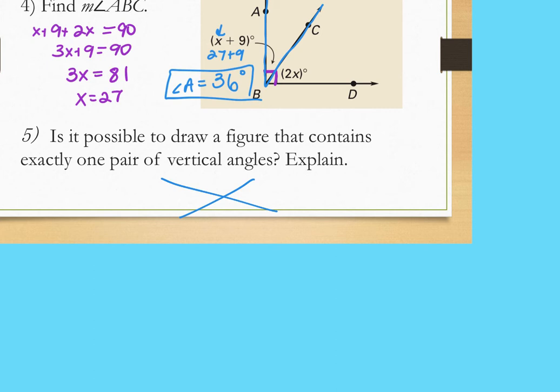Students ask if they'll have to draw vertical angles on the test. Teacher clarifies it will be more like identifying them from a given picture—for example, if angles are labeled 1, 2, 3, and 4, naming angle 1 and angle 3 or angle 2 and angle 4 as vertical pairs. The answer is no because drawing one pair automatically creates a second pair.